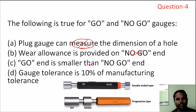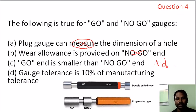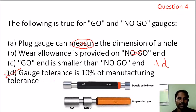The go gauge means the length or diameter is within limit — it is larger than the lower limit. The no-go gauge means the diameter is at the maximum. Gauge tolerance is 10% of the manufacturing tolerance. This is correct. Option D is the correct answer. Gauge tolerance is 10% of manufacturing tolerance — this is the exact answer.